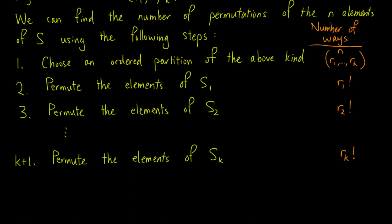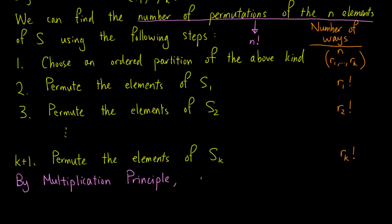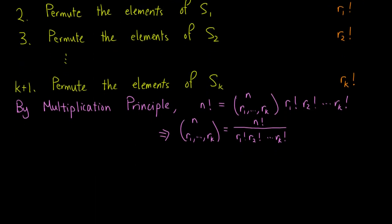By the multiplication principle, the number of permutations of the N elements of S, which we know is N factorial, is the product of the number of ways in each step. Therefore, we can write the equality: N factorial equals the number of partitions times R1 factorial, R2 factorial, up to Rk factorial. After rearranging, the number of partitions equals N factorial divided by the product of R1 factorial, R2 factorial, up to Rk factorial.